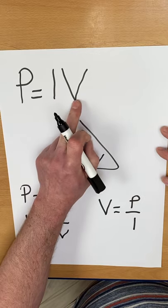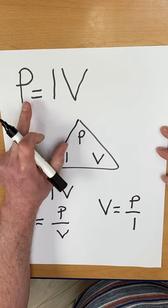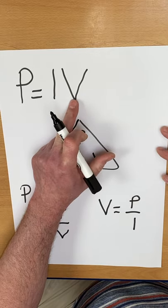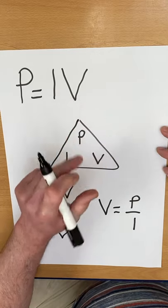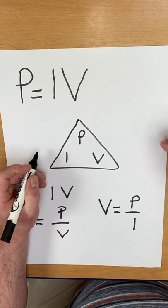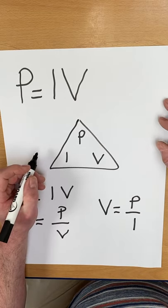P equals I times V — power equals current multiplied by voltage. Any top tips for remembering formulas? Leave them in the comments below.